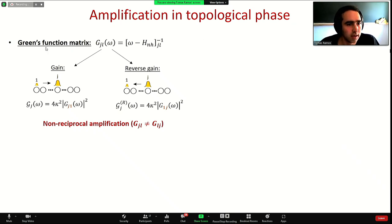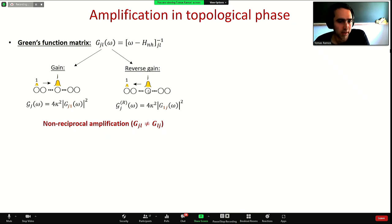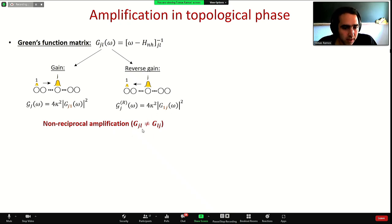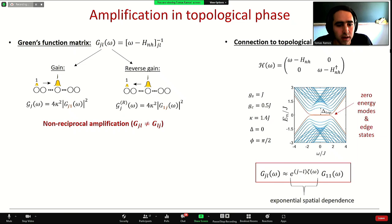The Green's function matrix — basically the inverse of the non-Hermitian matrix — describes all the amplifying properties of the system. The gain if you send a signal at the first site and retrieve it at site j is given by the modulus squared of this function, and the reverse gain for a signal propagating in the opposite direction depends on the Green's function with the reverse order ij. For non-reciprocal amplification the Green's function must be asymmetric.